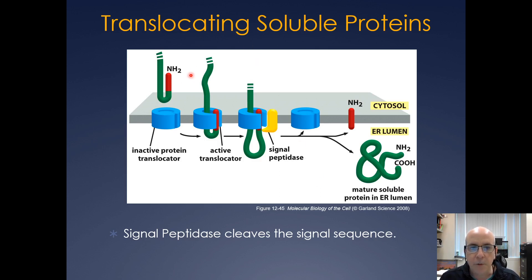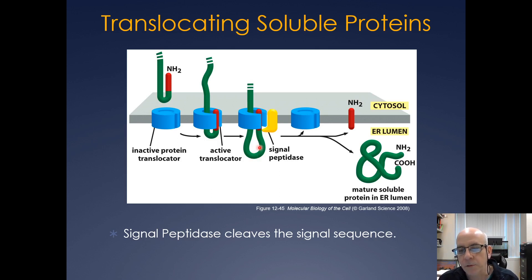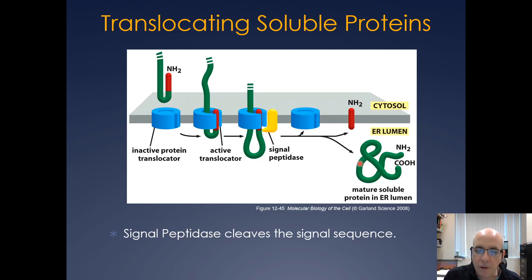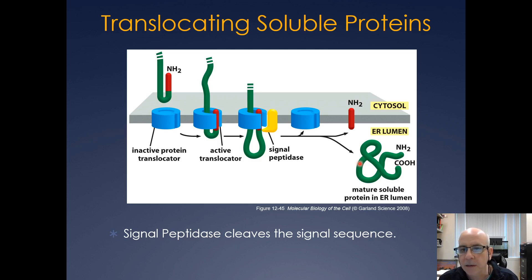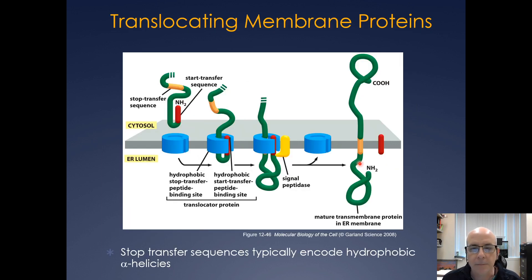For translocating soluble proteins, you still have a signal sequence that gets embedded into the translocation pore. Signal peptidase cleaves the signal peptide, and then it's either pulled through by BiP in post-translational translocation or fed through co-translationally. Eventually you have your mature soluble protein in the lumen of the ER, at which point disulfide bonds form, the protein gets glycosylated, and other processing events occur. Secreted proteins get multiple modifications: signal sequence cleavage, disulfide bond formation, and glycosylation.